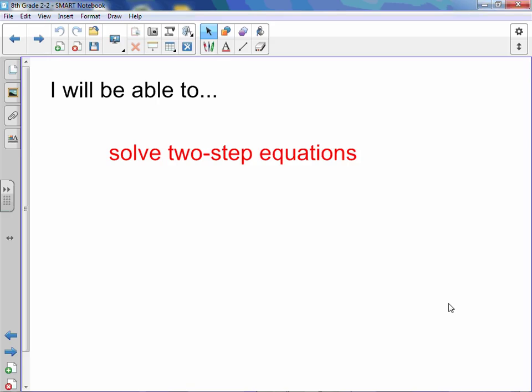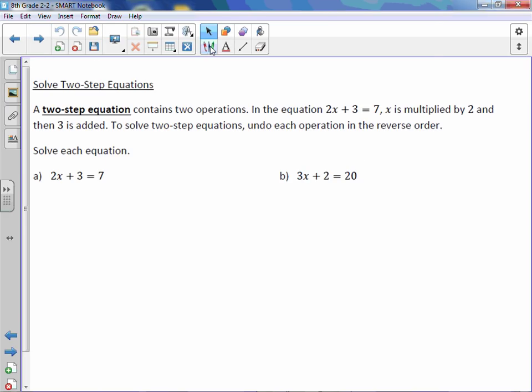You will be able to solve two-step equations. A two-step equation contains two operations. In the equation 2x plus 3 equals 7, x is multiplied by 2 and then 3 is added. To solve two-step equations, undo each operation in the reverse order.